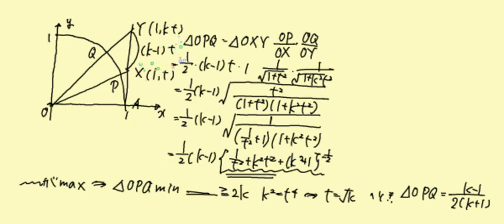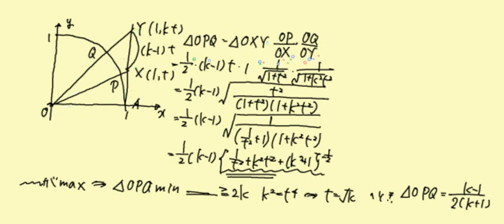AXとAYの長さの比が1対Kだということを言ってますから、AXの座標を1Tと置いたら、Yの座標は1KTなんですね。その差額がK-1Tになると。求めたいOPQの三角形なんですが、まずOXYの面積を求めた後に、OX分のPの辺の比とOY分のQの辺の比をかけてやれば出ますよね。